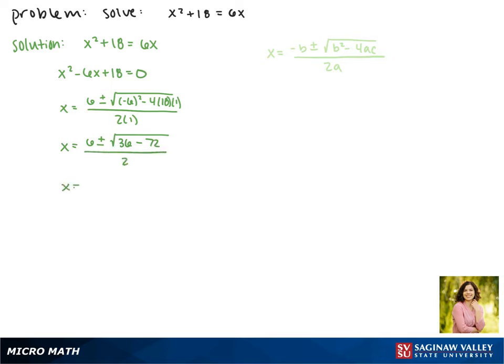36 minus 72 is negative 36, and we can't take the square root of a negative number, so this equation has no real solutions.